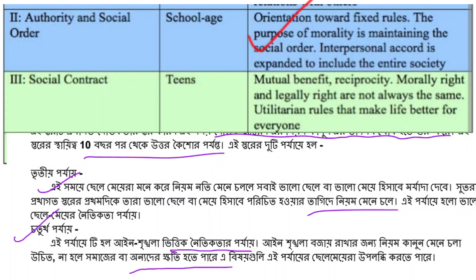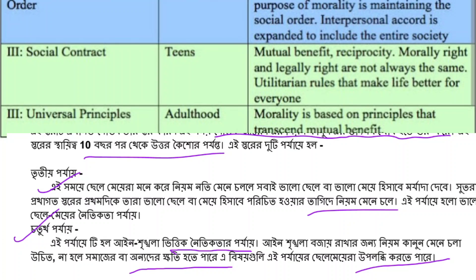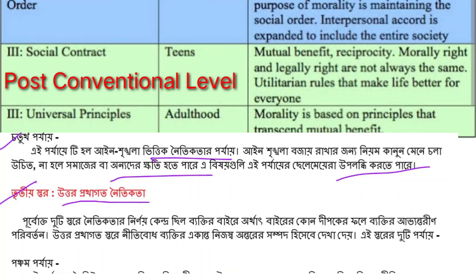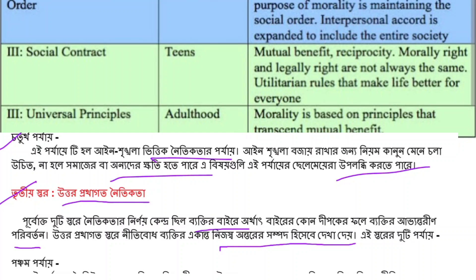The last level is the post-conventional level, also known as the principled level of morality. At this level, moral reasoning is no longer centered on external rules or authority. The individual begins to develop an internalized sense of ethics that goes beyond societal norms. Post-conventional morality focuses on universal principles rather than imposed rules.